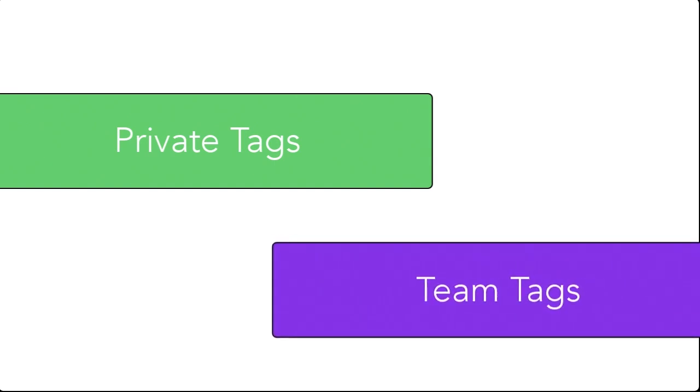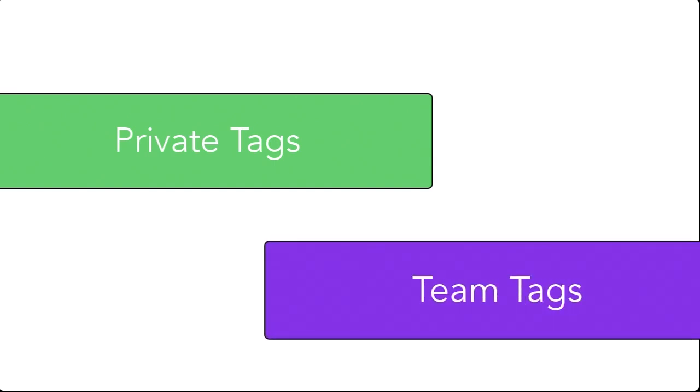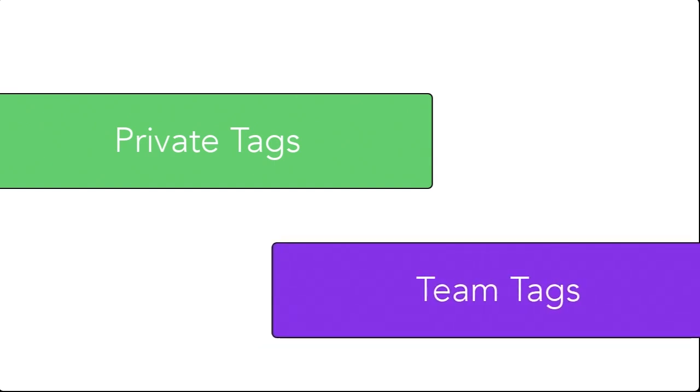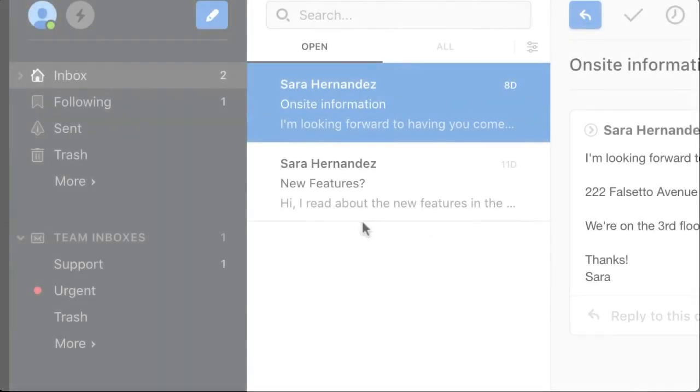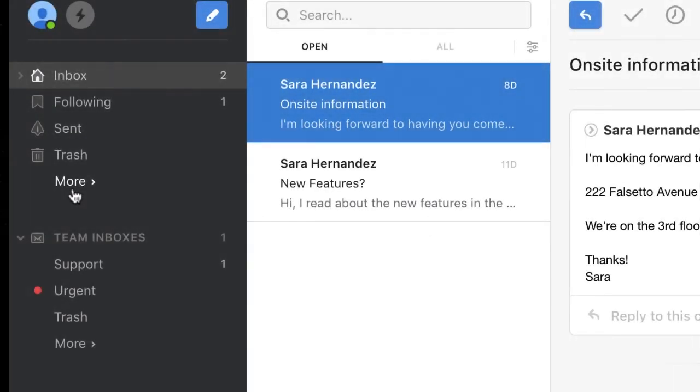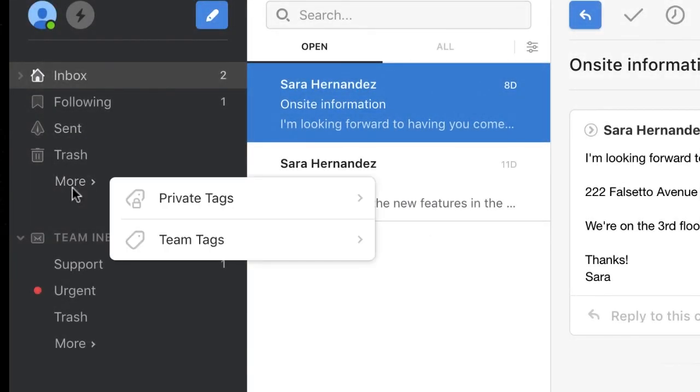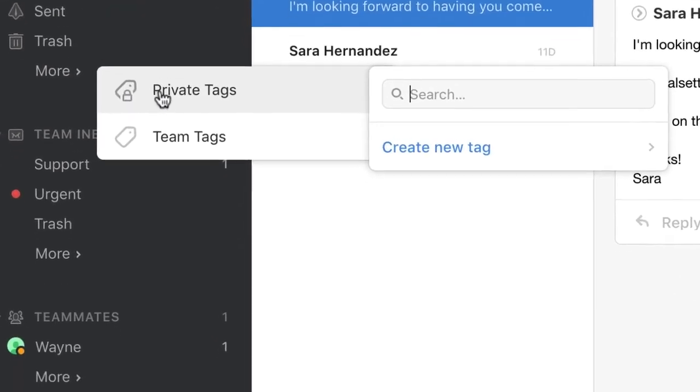There are two types of Front tags: private tags, that only you can see, and team tags, that are available to multiple team members. Team tags are set by your account admin, and you'll be able to access them here.